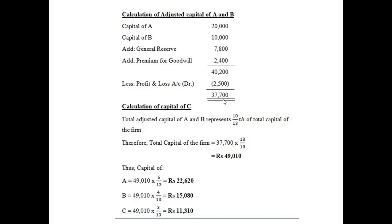We take the reciprocal of 10/13 to find the total capital of the firm: 49,010 rupees. This total capital is then apportioned as A gets 6/13, B gets 4/13, and C gets 3/13. These become the required capital balances for all three partners.